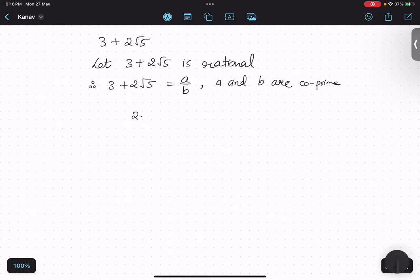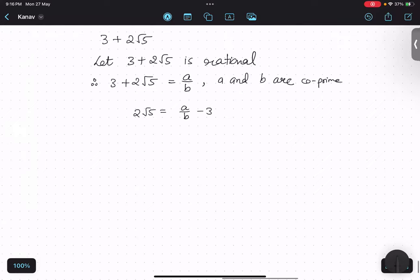So 2 root 5 is equal to a upon b minus 3. I'll take LCM. So b is the LCM, a minus 3b. Is this step clear? I'll shift this 2 to the other side. Over here it is getting multiplied. If I shift to the other side, it will divide: a minus 3b upon 2b.